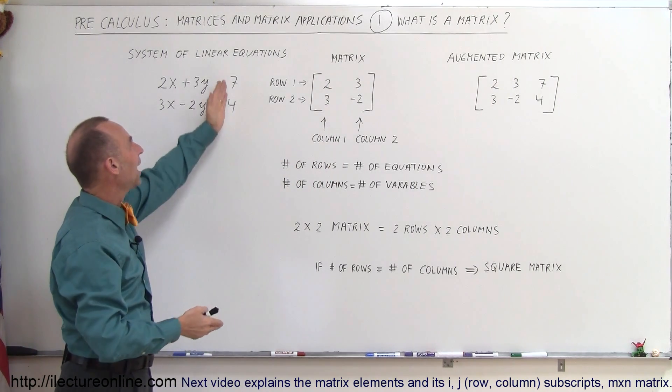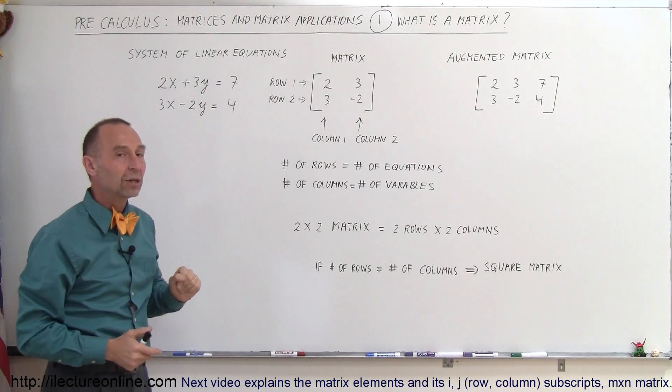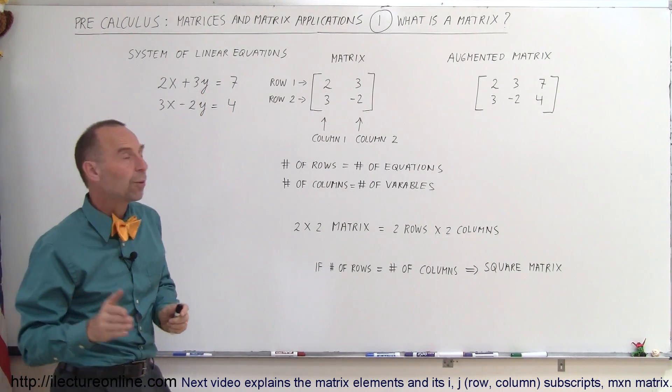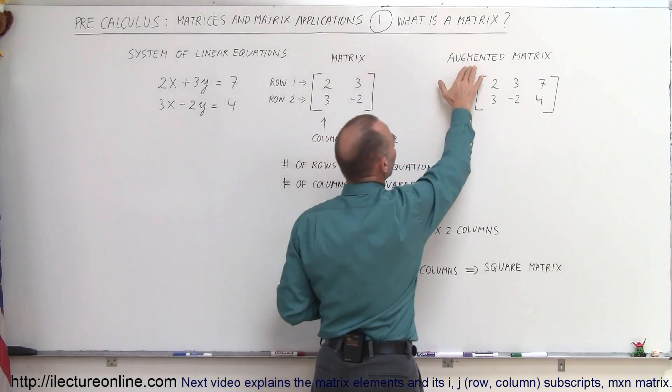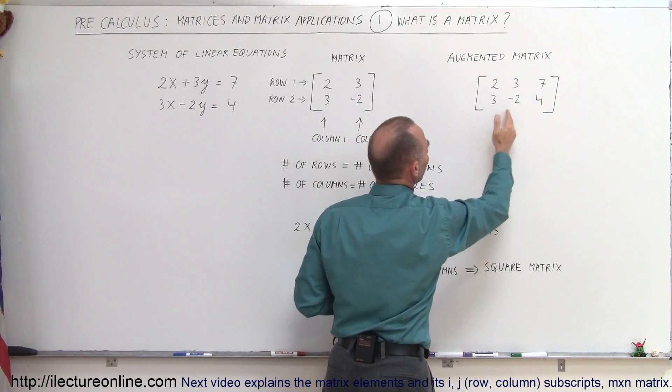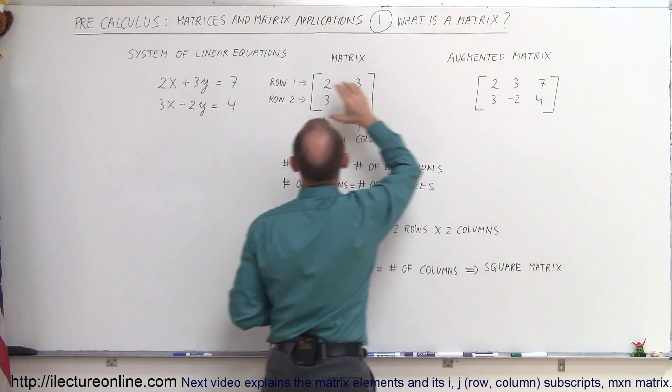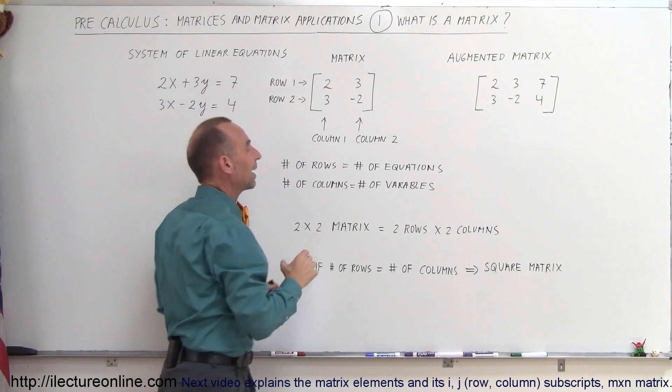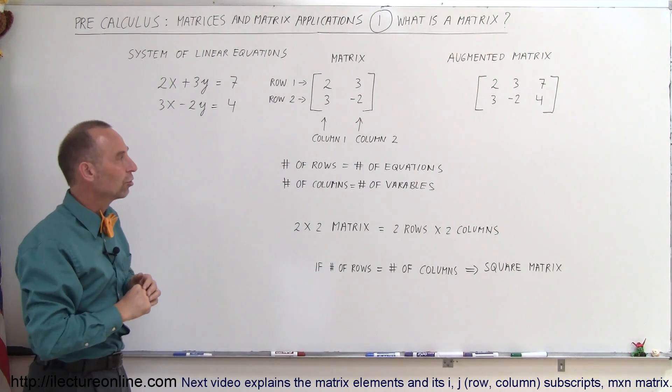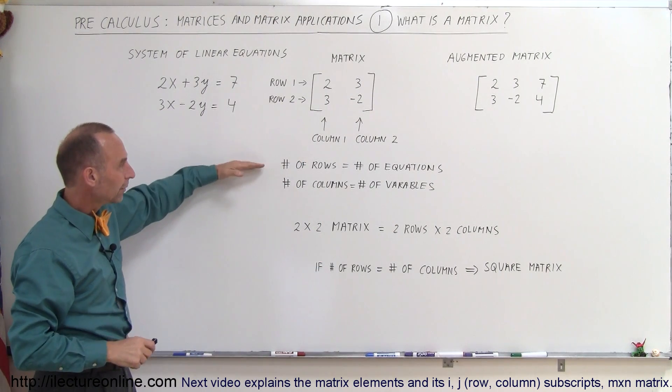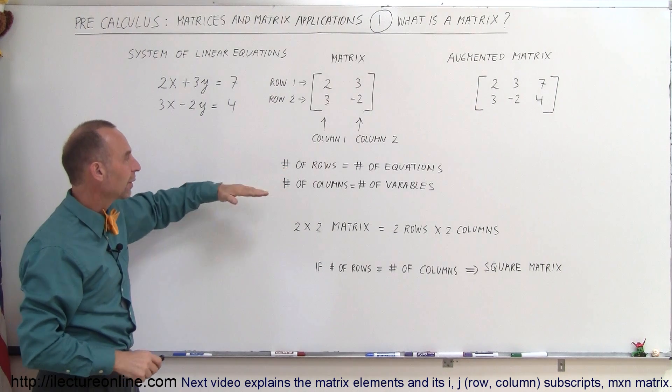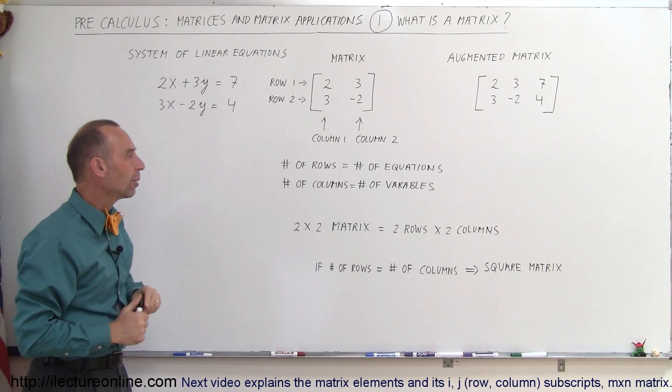In this matrix we do not have the constants on the other side of the equal sign, but sometimes we write what we call an augmented matrix. An augmented matrix also includes the constants on the right side of the equal sign in our system of linear equations. Again, number of rows equals number of equations, number of columns equals the number of variables.